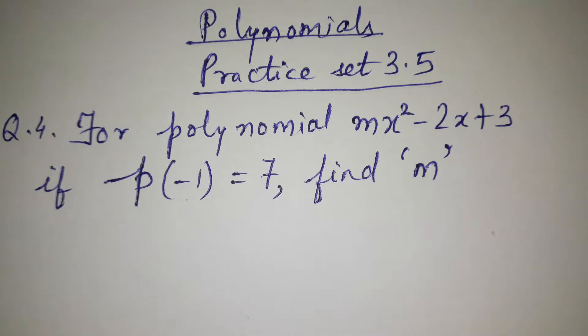This is question number 4: for the polynomial mx² - 2x + 3, if p(-1) = 7 (that is, the polynomial value is 7 when variable x equals -1), we need to find the value of m.